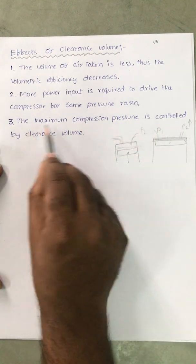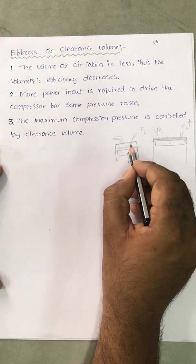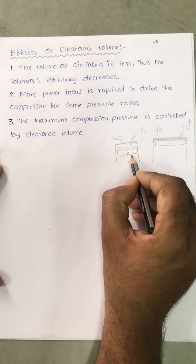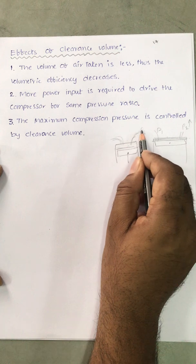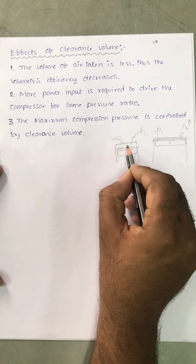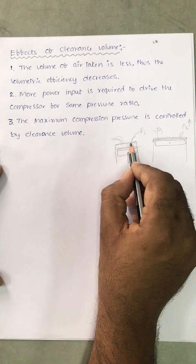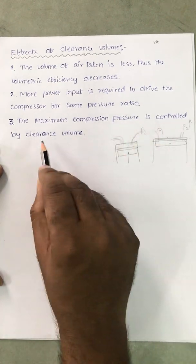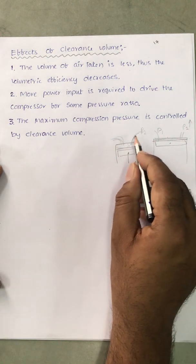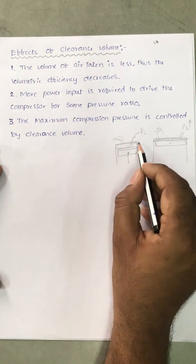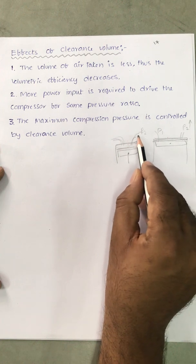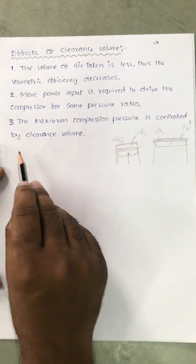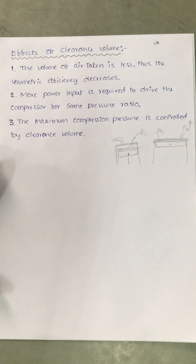The third effect is that the maximum compression pressure is controlled by clearance volume. After compression, the pressure is limited by clearance volume. If clearance volume is not there, the pressure would be very high. But with clearance volume, some air remains inside, which reduces the pressure. So the exit pressure is controlled by clearance volume. In the next class, we will derive the work input to the compressor with clearance volume. Thank you very much.